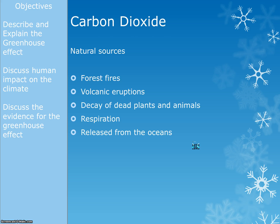Let's start by talking about carbon dioxide. Carbon dioxide does have a lot of natural sources — it is not just man-made. Natural sources include naturally occurring forest fires; volcanic eruptions, where degassing releases carbon dioxide into the environment; the decay of dead plants and animals, which we covered in the carbon cycle in Biology 2; respiration, where any living thing releases carbon dioxide as a byproduct; and some carbon dioxide is also released from the oceans, though generally they absorb more than they release.